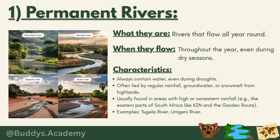Permanent rivers always contain water, even during droughts. They are often fed by regular rainfall, groundwater, or snow melts from highlands, and are usually found in areas with high or consistent rainfall — for example the eastern parts of South Africa like KZN and the Garden Route. Examples of permanent rivers are the Tugela River or the Amgiani River. If you look at the diagram, the image in the upper left quarter represents a permanent river — notice how wide it is and how much water is actually flowing.